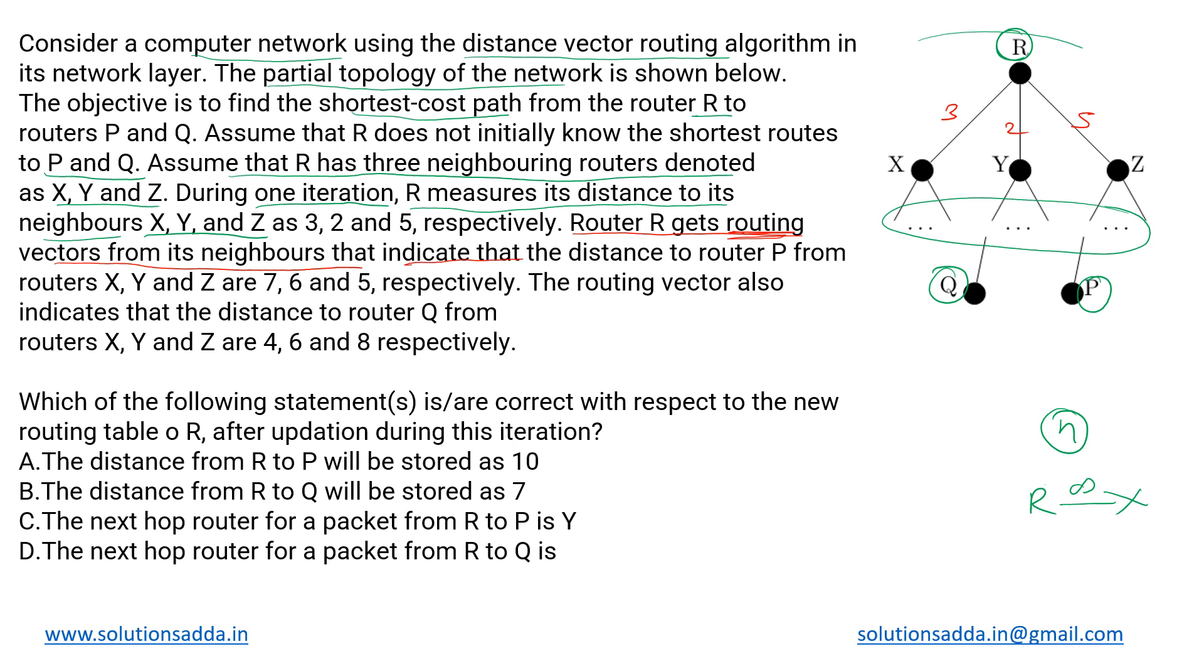So it gets those DVRs from its neighbors and that indicates that the distance to router P from routers X, Y and Z is seven, six and five respectively. So it happens that X, Y and Z are in some way connected to P and Q, so they already know what is their distance from P, Q and R. They return that information to their immediate neighbor R.